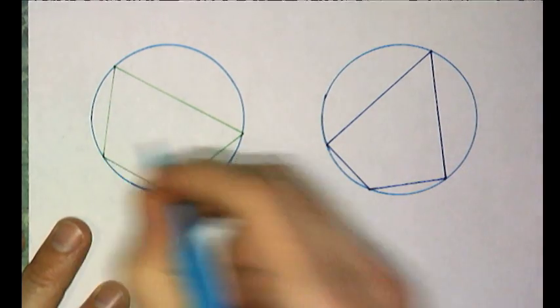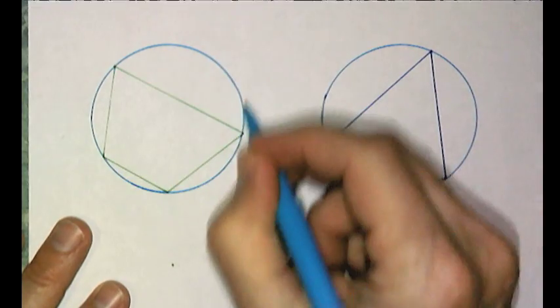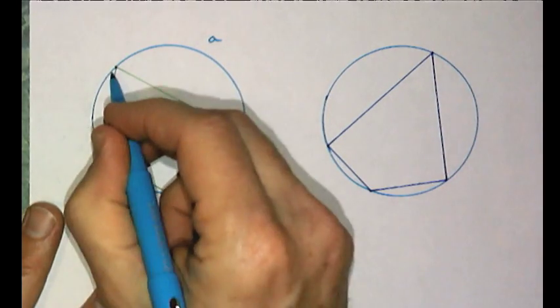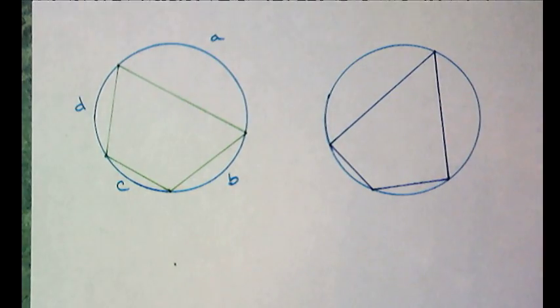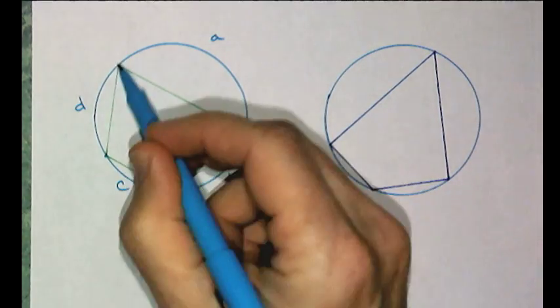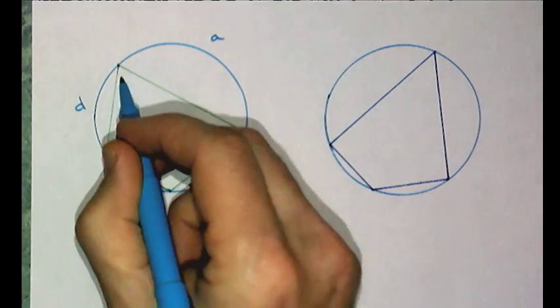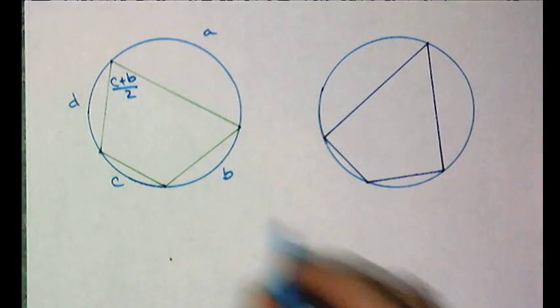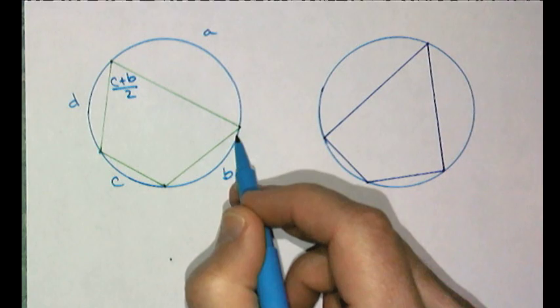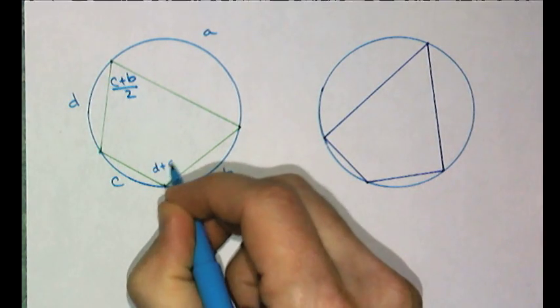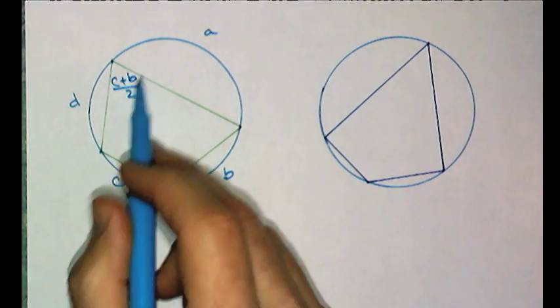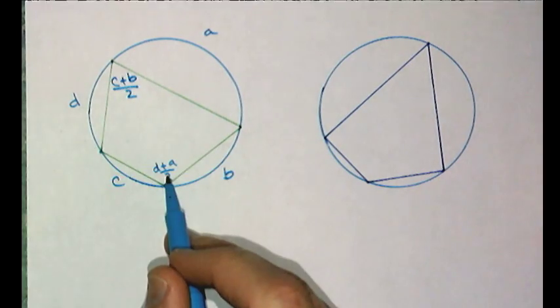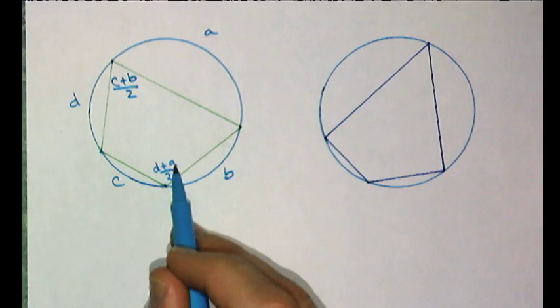But what is true about all cyclic quadrilaterals? And this time, I want to look at the angles. So I know, let's say this arc from here to here is a, this arc from here to here is b, this one is c, and this one is d. Right now we know that the inscribed angle here is half of the intercepted arc. So this one is c plus b divided by 2. Make sense? This one is d plus a divided by 2.